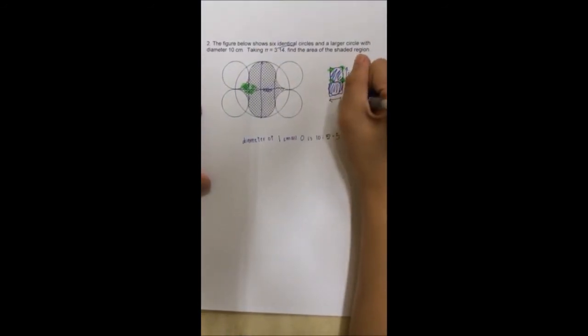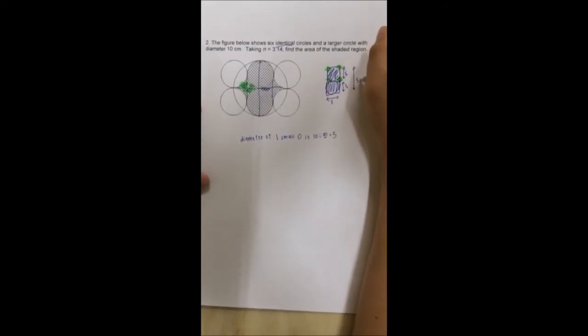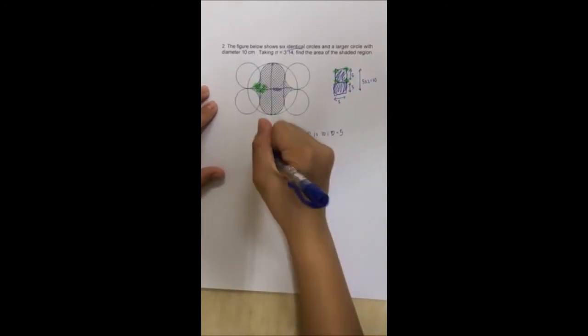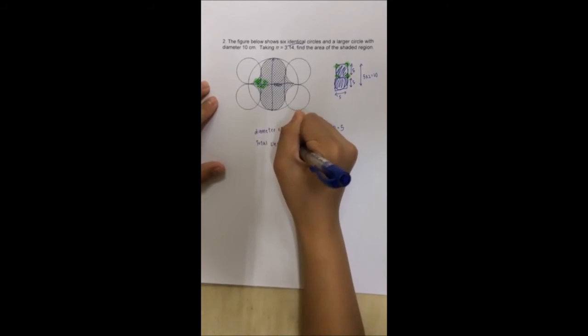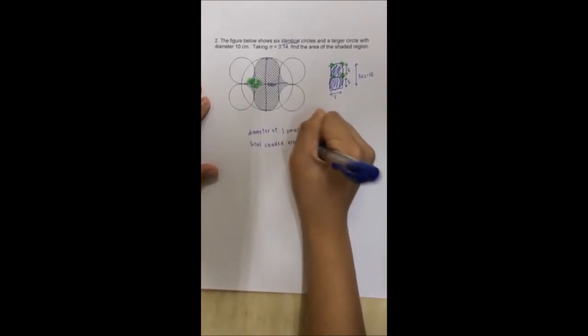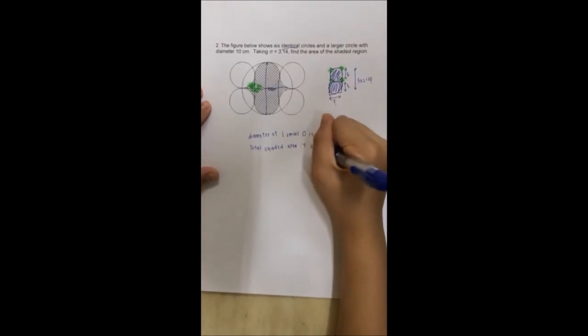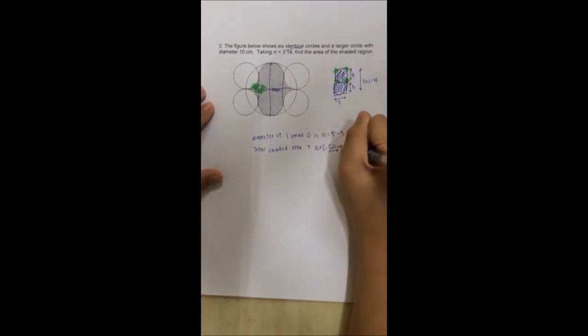Here is also 5 and total here is 5 times 2 which is 10. So the total shaded area is 10 times 5 which gives you the answer of 15 cm square.